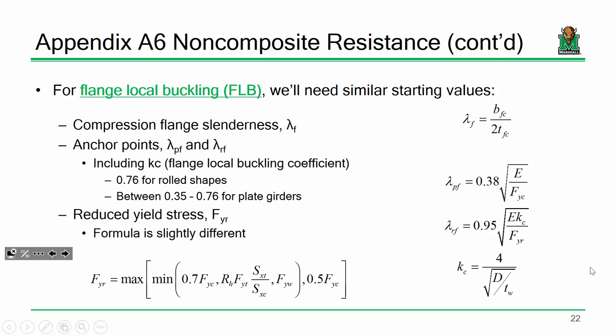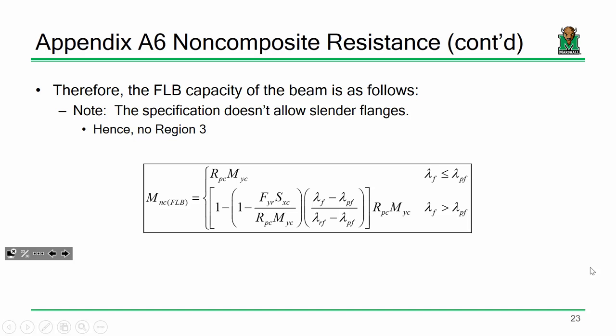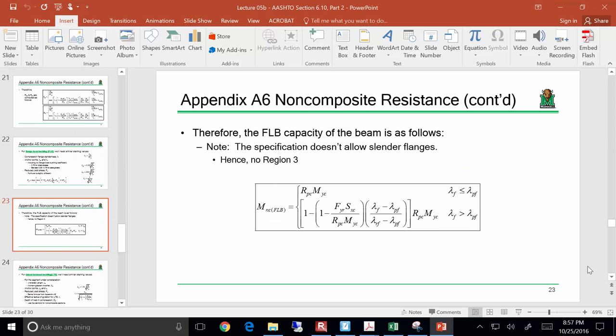That homework due November 1st — let's push it back to November 8th since we didn't even finish the capacity check. I'd recommend setting up a spreadsheet to compute all these properties automatically. If you change a property — say the flange goes from 14 to 12 inches wide — the spreadsheet updates everything automatically. That's the power of Excel. We'll pick this up next week, finish this section quickly, then do some deck casting material and get into shear. Have a good weekend.